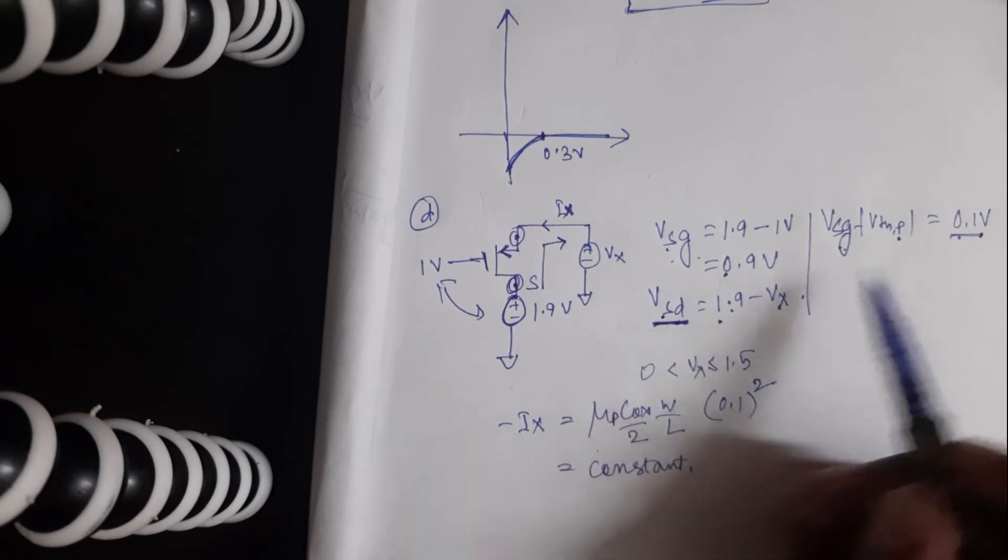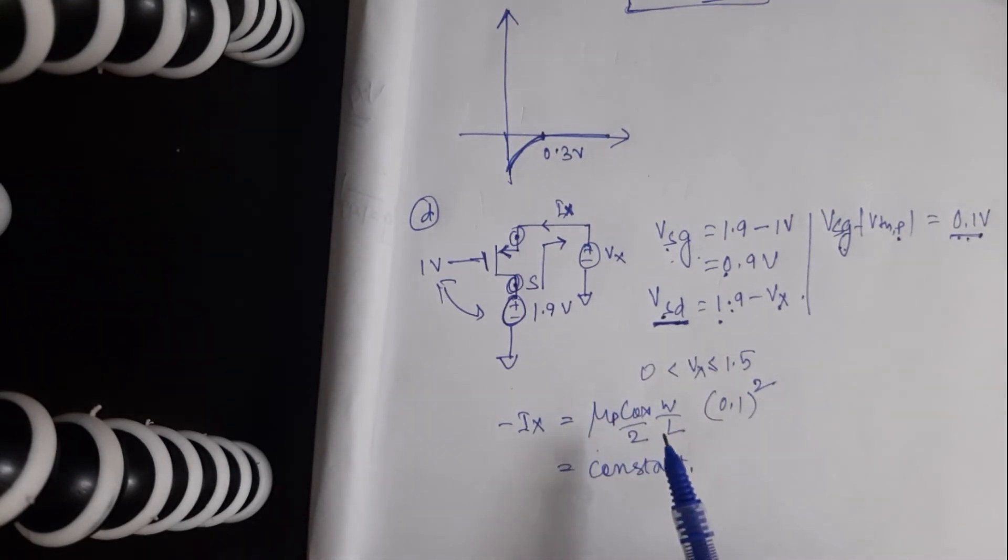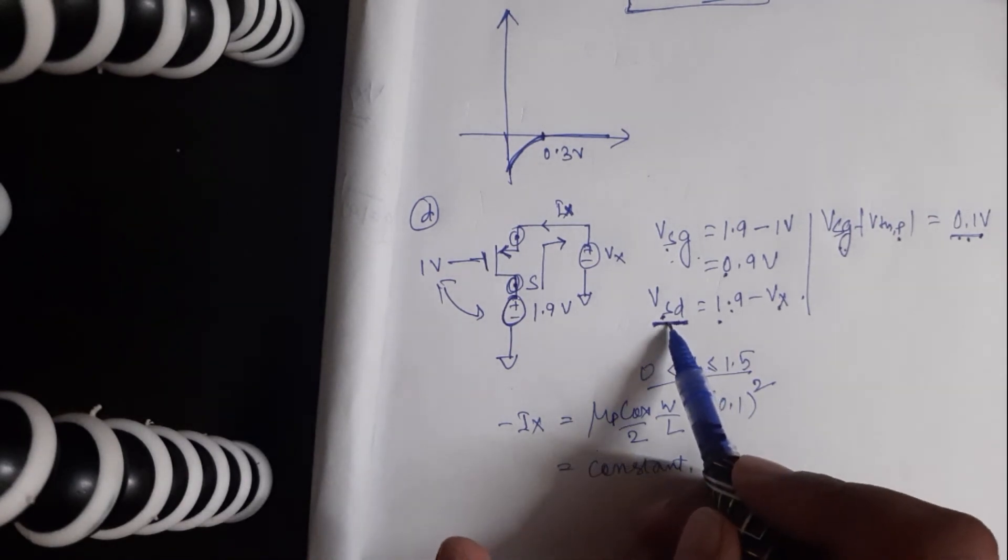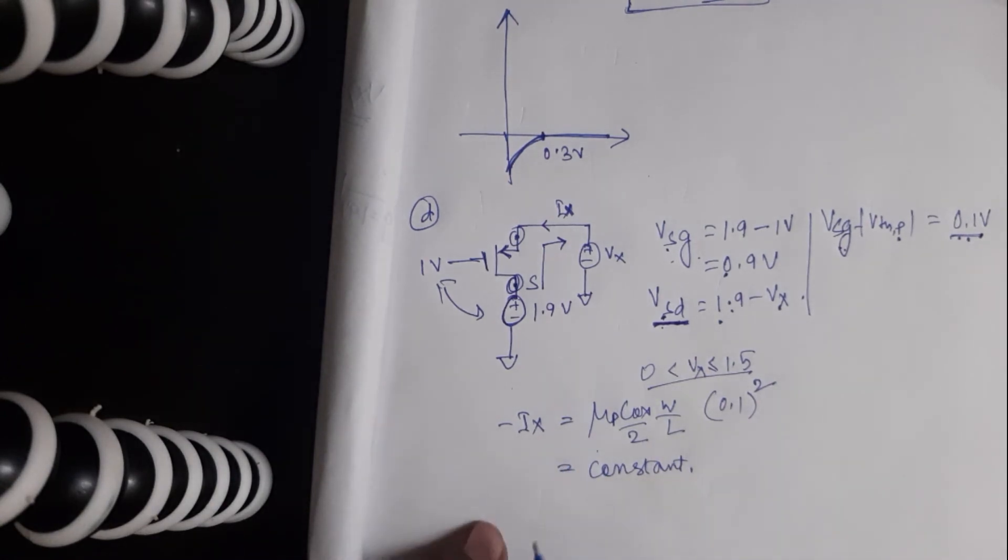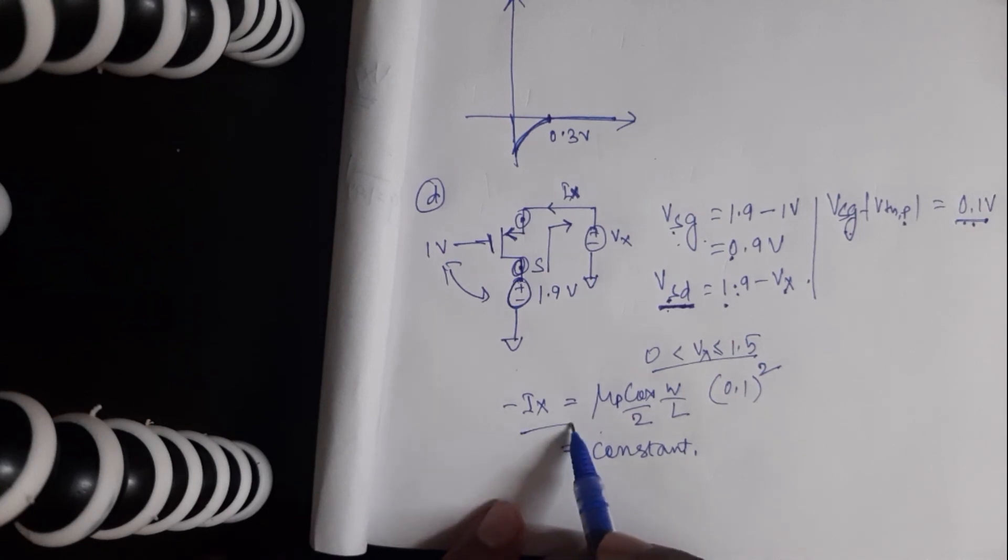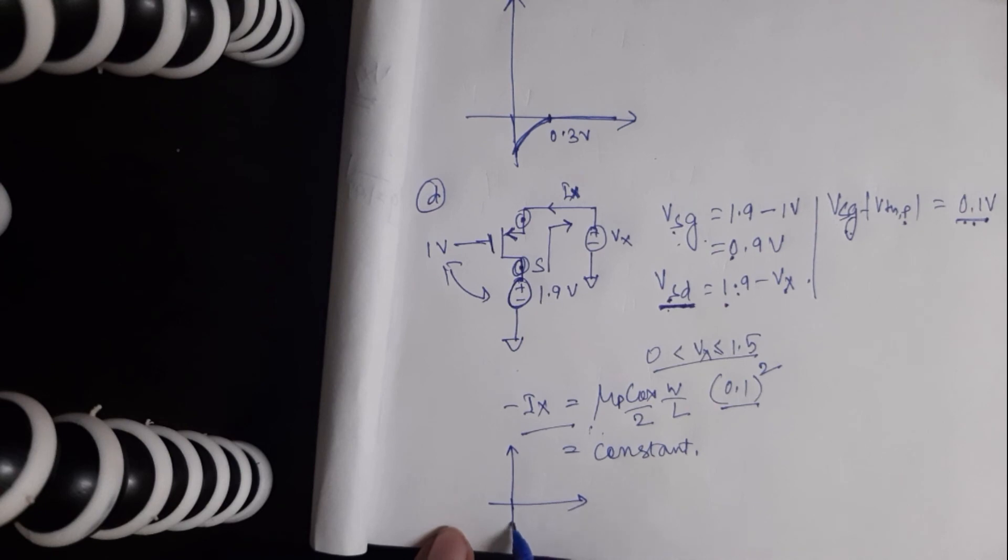So as long as the absolute value of VSD is greater than 0.1 volts, the transistor will be in saturation. In this case, since the range of VX is only from 0 to 1.5, the absolute value of VSD won't go below 0.1 volts, so the transistor will always be in saturation. And this is the saturation current equation, which is nothing but a constant term, or rather a negative constant term. And I don't think it's necessary to put it on the graph, and anyways the values don't matter. So this is how the current should look like when the range is from 0 to 1.5.